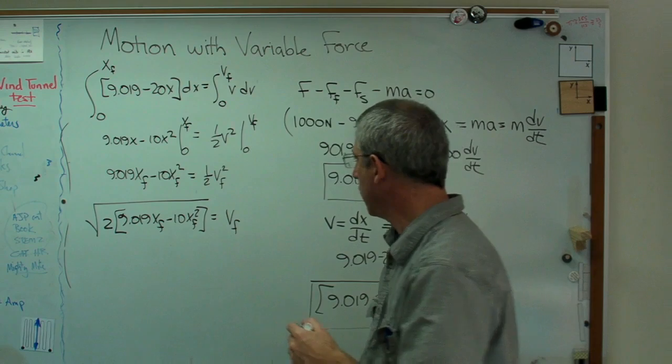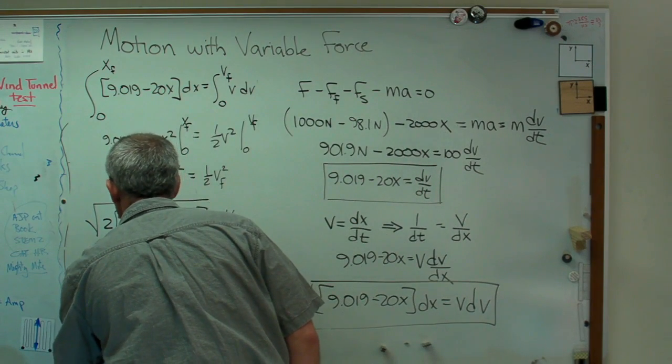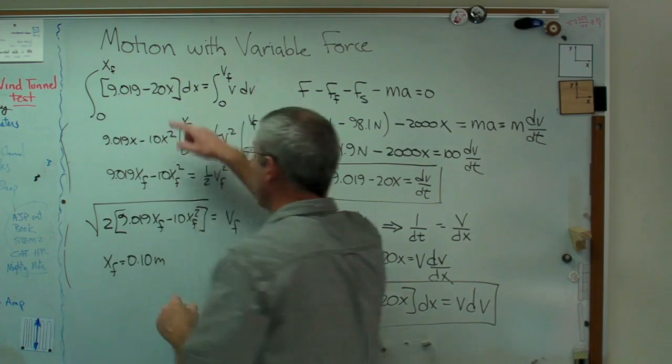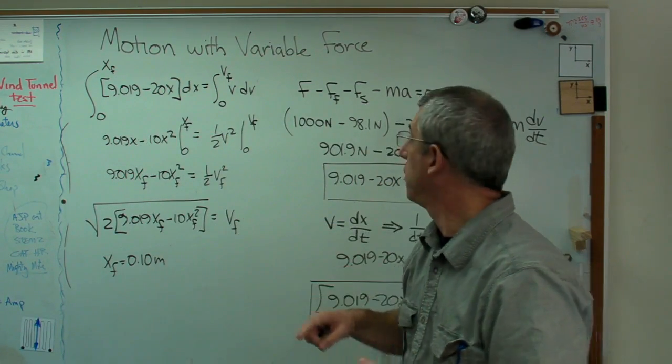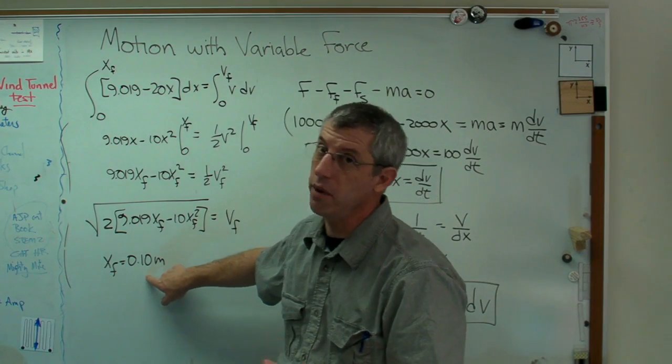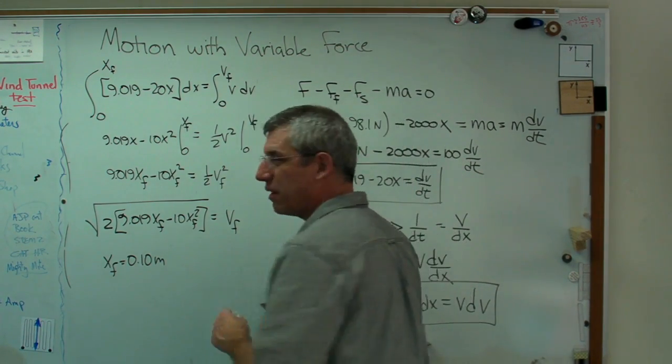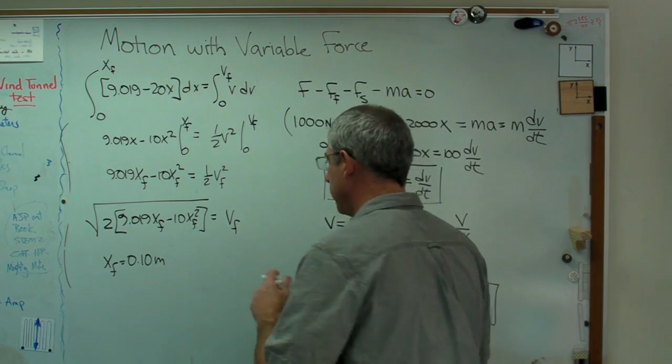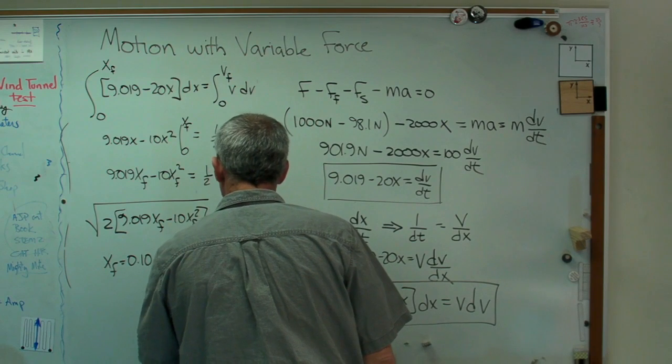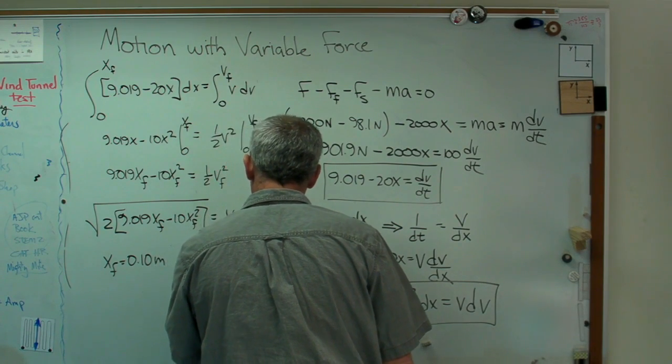9.019x final minus 10x final squared equals v final and that's all square root sign. So that's it. And it turns out that if you plug in x final equals 0.10 meters. Now remember, we've done all this in newtons and meters and kilograms. So I'm going to leave this in terms of meters. If I put in 100 millimeters, I'm going to get the wrong answer. In fact, I'm going to get a complex answer for reasons I'll have to explain later.